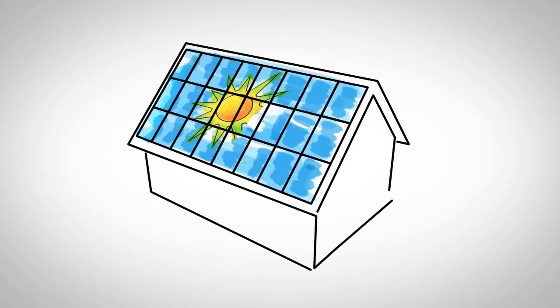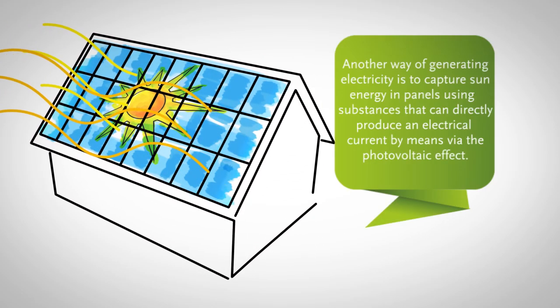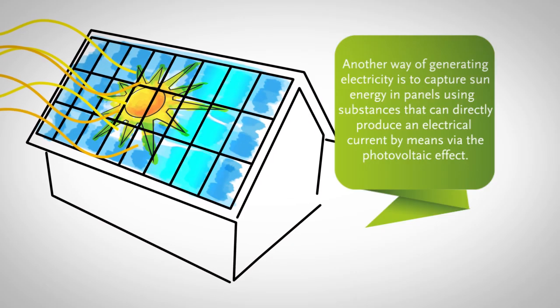Another way of generating electricity is to capture sun energy in panels using substances that can directly produce an electrical current via the photovoltaic effect.